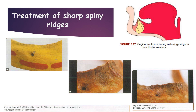Treatment of sharp spiny ridges: these knife-edge ridges are seen most commonly in the mandibular lower anterior region due to rapid labial and lingual resorption. This leads to hypermobile tissue covering the ridge, which gets trapped between the denture and the sharp bony ridge, causing denture soreness, discomfort, and instability. Mayer described three types: razor-like ridge, sawtooth ridge, and discrete spiny bony projections.